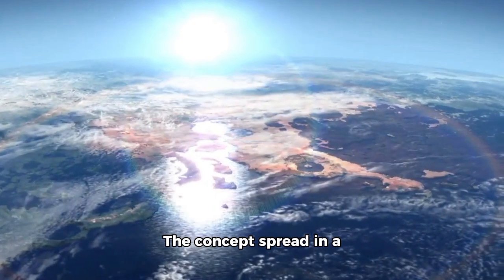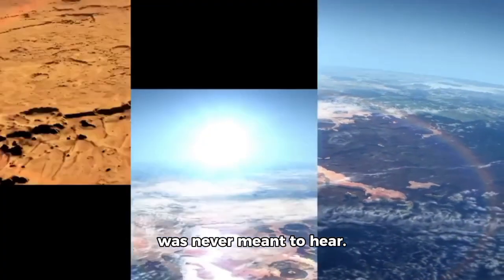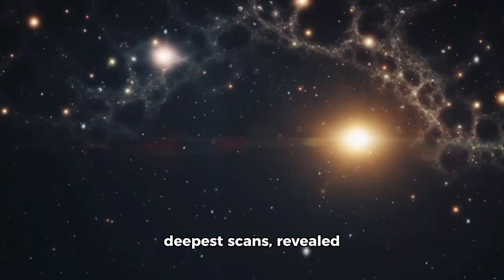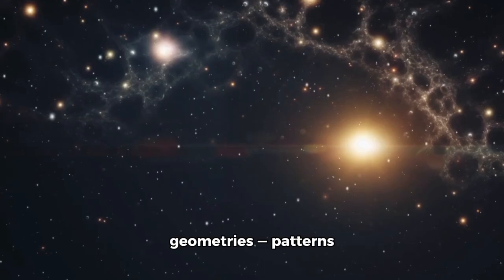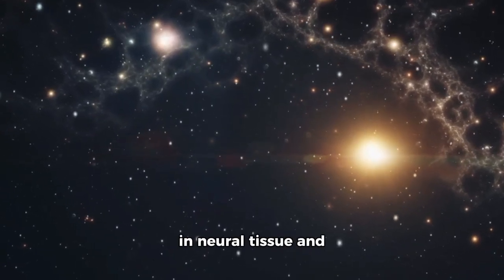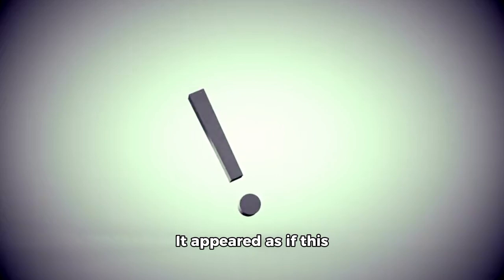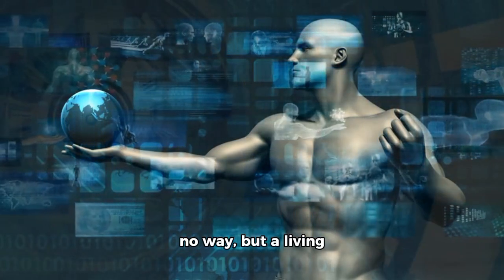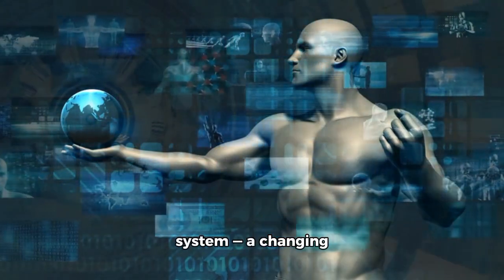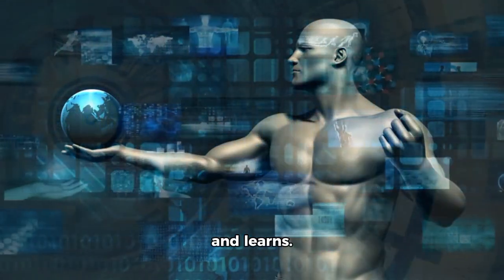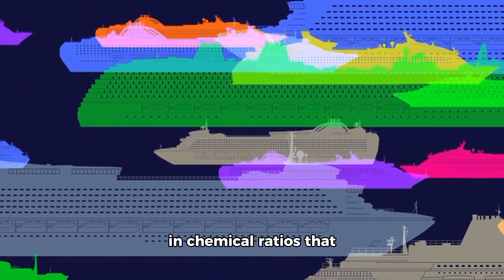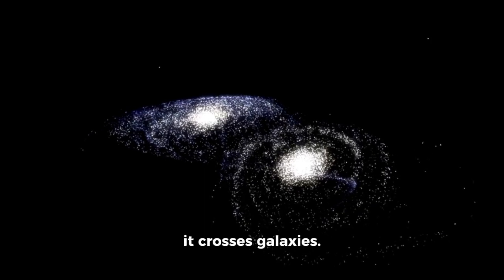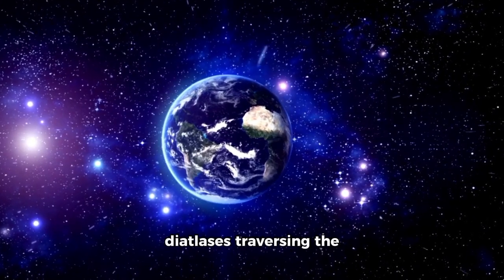The concept spread in a level of secrecy humanity was never meant to hear. The internal organization of the object, mapped by Webb's deepest scans, revealed recursive fractal geometries, patterns identical to those found in neural tissue and advanced quantum processes. It appeared as if this object wasn't merely built. It was grown. A human-like machine in no way, but a living system, a changing intelligence that moves and learns. Imagine a ship that thinks in chemical ratios that geometry dreams of. That evolves in silence as it crosses galaxies.